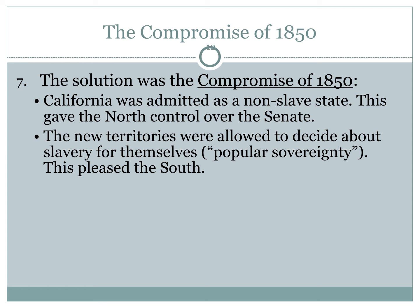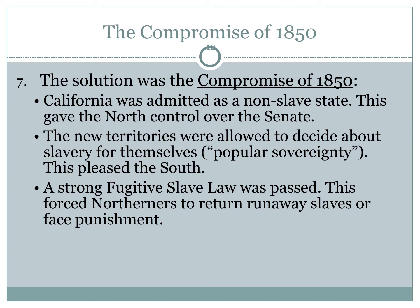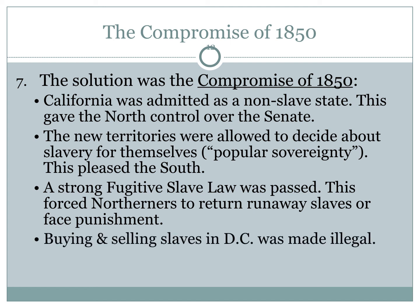The South believed most new territories would choose to come in as slave states. Additionally, the South received a stronger Fugitive Slave Law, which forced Northerners to return runaway slaves or face punishment, and allowed slave catchers to go into Northern states to capture and return escaped slaves. Finally, the buying and selling of slaves in Washington DC was made illegal, ending the slave trade there but not slavery itself. Both sides got something from the Compromise of 1850, but just like the Missouri Compromise, both sides came out still angry, and a complete solution to the issue of slavery had still not presented itself.